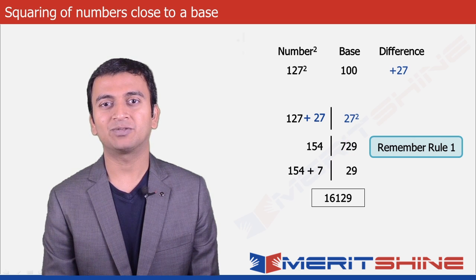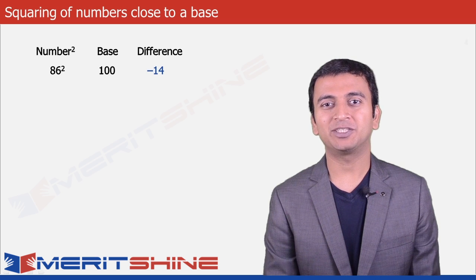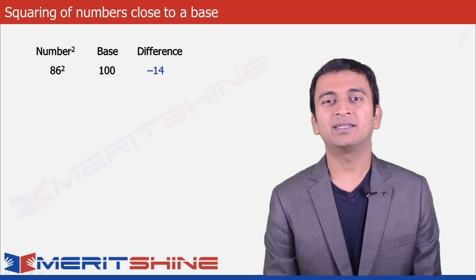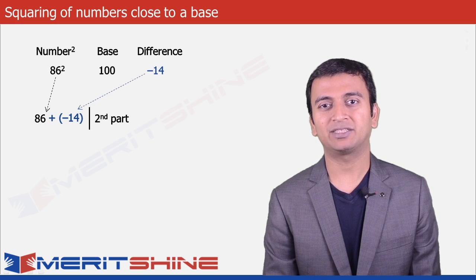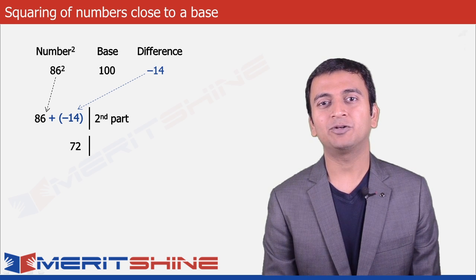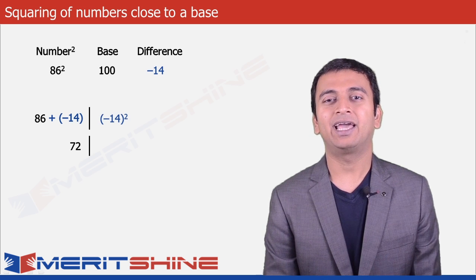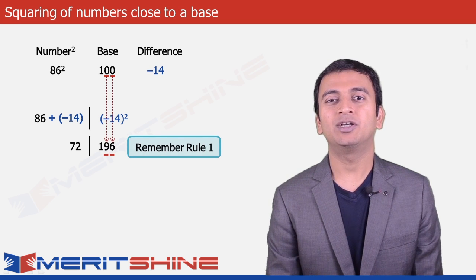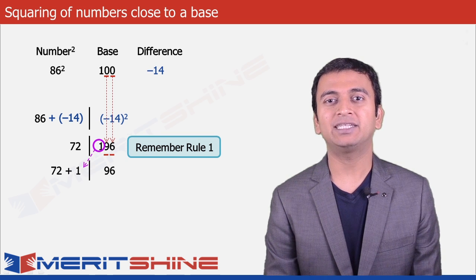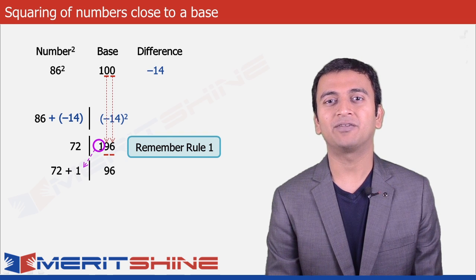Clubbing these two, we will get our final answer as 16129. Let us now take 86 as an example. Here again our base would be 100 and the difference would be minus 14. The first part would be the number added to the difference, which is 86 plus minus 14 giving us 72, and the second part would be the square of the difference, which is minus 14 squared giving us 196. Since the second part cannot have more than two digits, the extra 1 will be carried to the first part making it 72 plus 1 is 73, and we will be left with 96 in the second part, giving us our final answer as 7396.